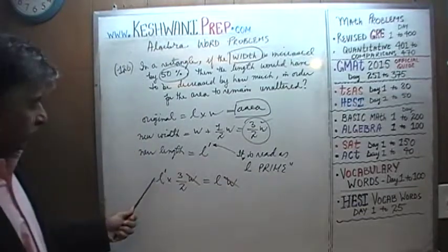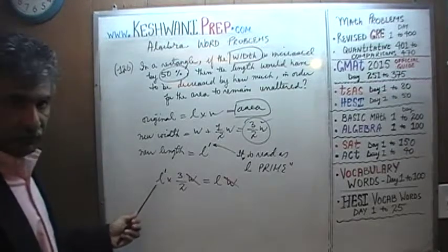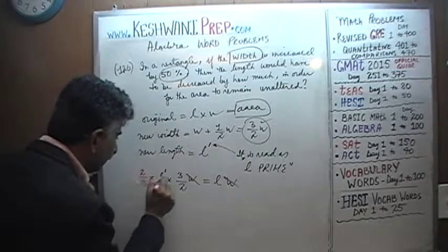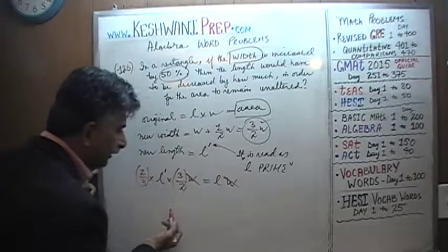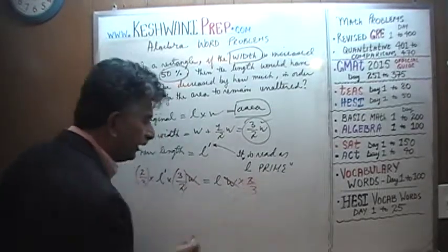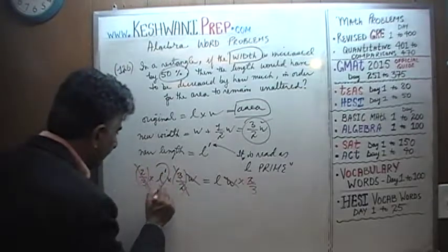L prime is what we are interested in. So L prime times three halves equals L, which means if you want to find L prime, multiply both sides of the equation by the reciprocal of three halves, multiply both sides by two-thirds, and we are done, because two-thirds and three halves will cancel out, and there is our L prime.